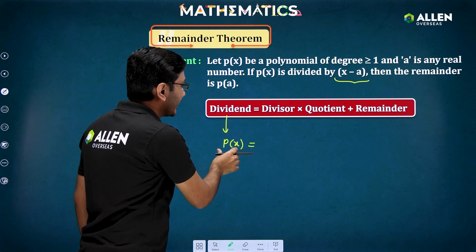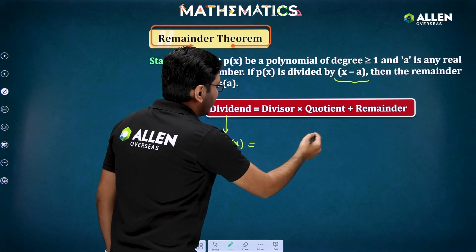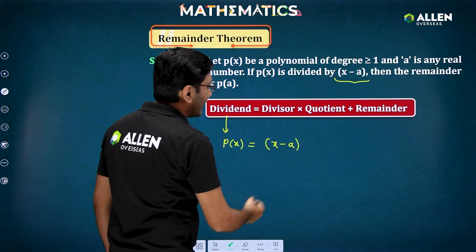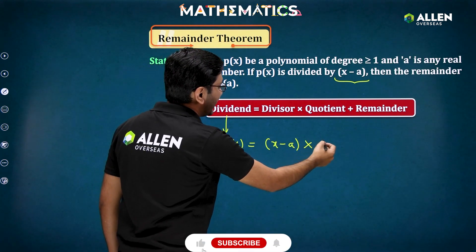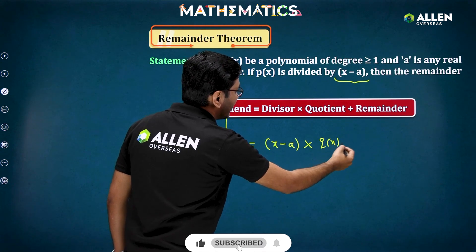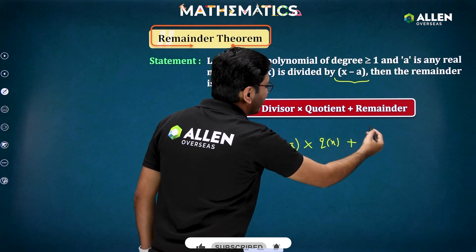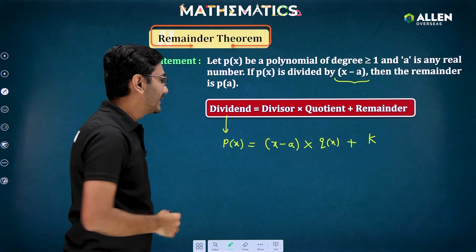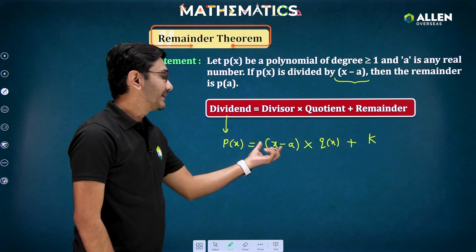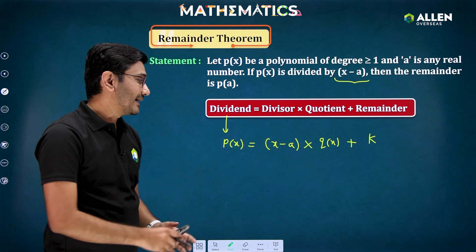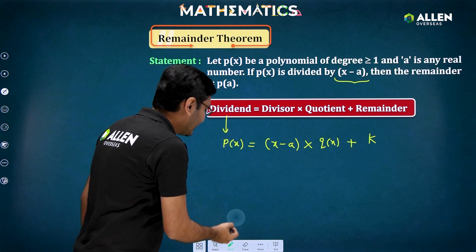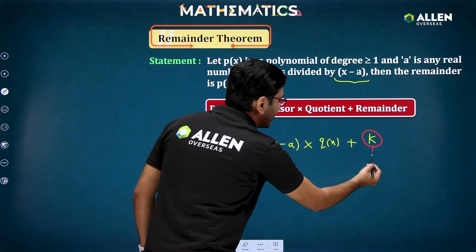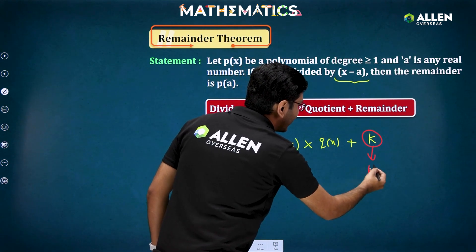When you are dividing a polynomial p(x) and your divisor is (x minus a), suppose you are getting a quotient q(x), then definitely the remainder will be some constant k. So what will that remainder be when you are dividing your polynomial by (x minus a)? This remainder theorem says that this remainder k will be just p(a).